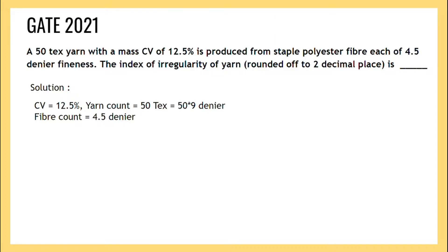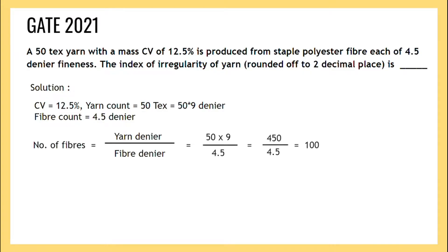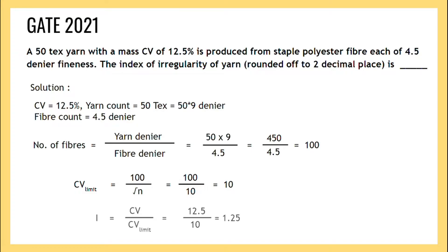For finding limit CV, we have to find the number of fibers, that is yarn denier upon fiber denier: 50 × 9 upon 4.5, which becomes 100. CV limit is 100 upon root N, that is 100 upon root 100, which becomes 10. So the index of irregularity is actual CV upon calculated limit CV, that is 12.5 upon 10, which equals 1.25.